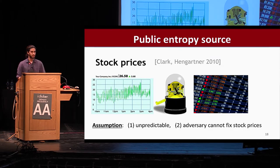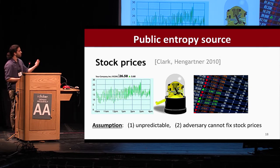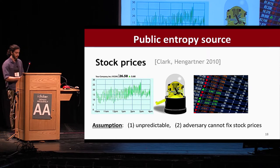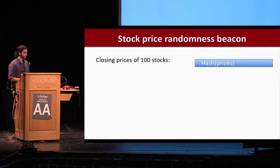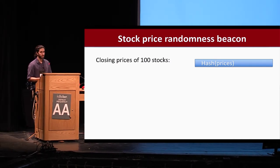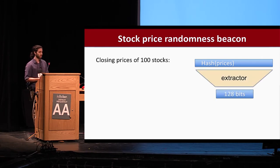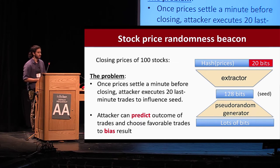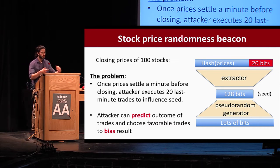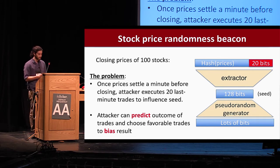Another idea is to use a publicly occurring entropy source such as stock prices, under the assumption they're unpredictable and an adversary cannot fix them over a long period. However, stock prices are manipulatable in the short term due to high-frequency trading. If you take the closing prices of 100 stocks and hash them to produce a beacon output, a high-frequency trader just before closing can execute last-minute trades to influence the seed, predict the outcome of each trade, and choose the most favorable action to bias the result.